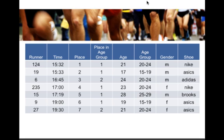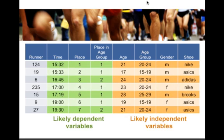From the independent and dependent variable video, the likely dependent variables are time of finish, place of finish, or place in your age group. An age group includes your age and your gender in terms of forming groups. Likely independent variables would be age or age group, gender, and type of shoe. Of course you'd collect a lot more information from a 5K race — this is just a sample dataset to work with for this video.